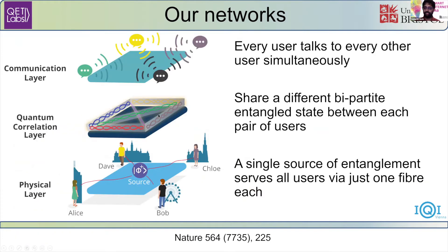What we want to do is create a quantum communication network which has the simplest possible physical layer — a single source serving all users with just one fiber per user — but have an arbitrarily complex quantum correlation layer. So we can distribute bipartite entangled states between any pair of users and do everything simultaneously, enabling everyone to execute standard quantum communication protocols such that every user can talk to every other user securely and simultaneously.